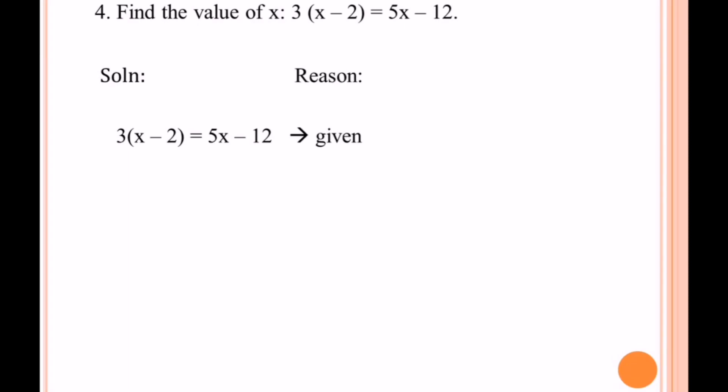We're going to multiply 3 to the term inside the parentheses, so we have 3x minus 6. Bring down 5x minus 12 by distribution. We're concerned with the value of x, so we're going to transpose.